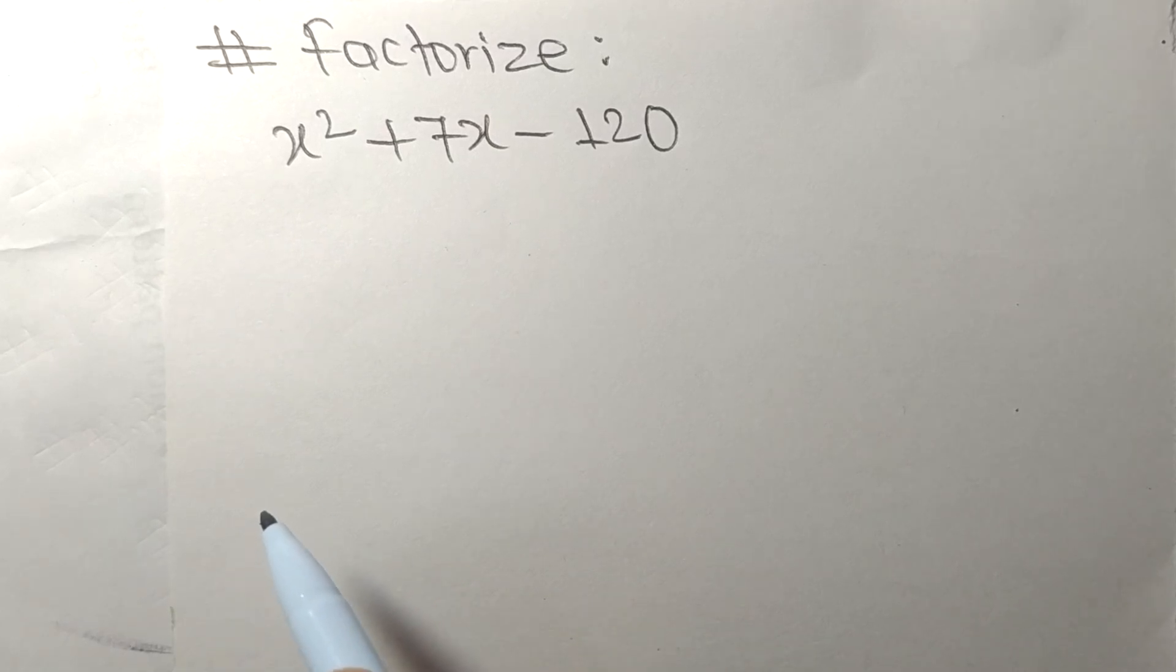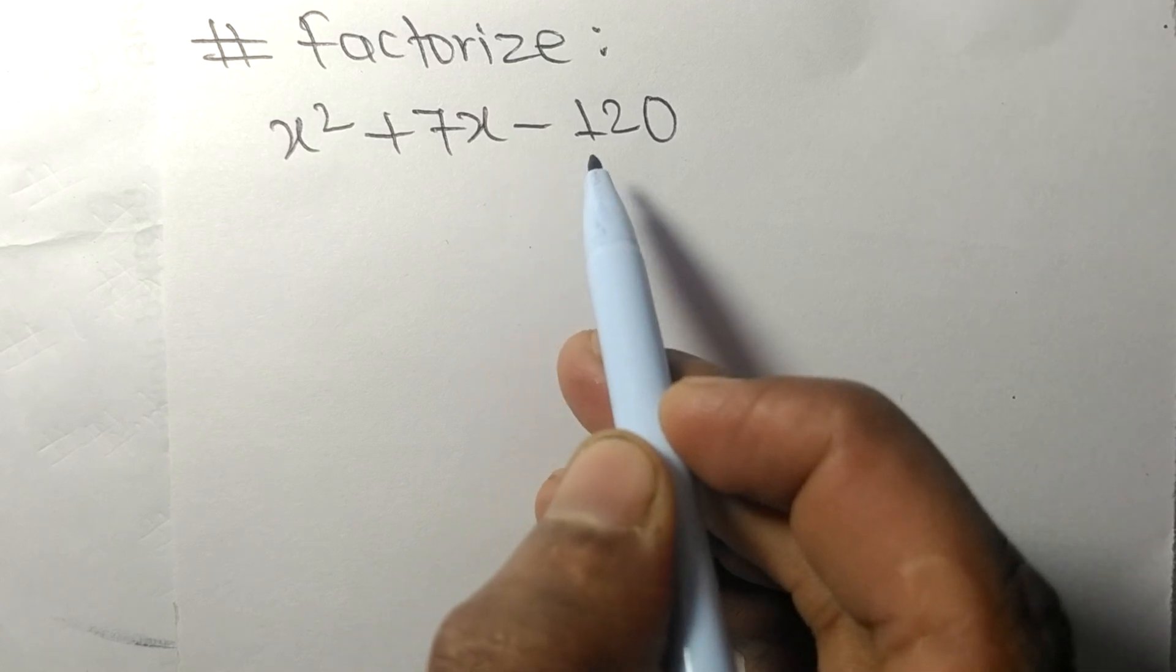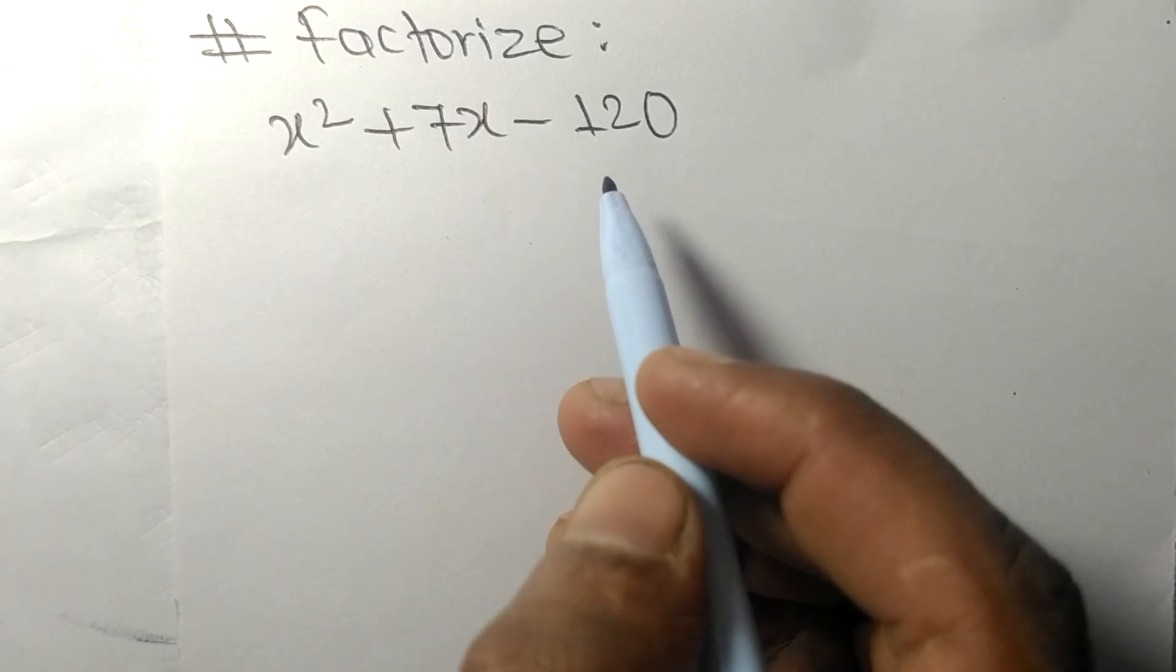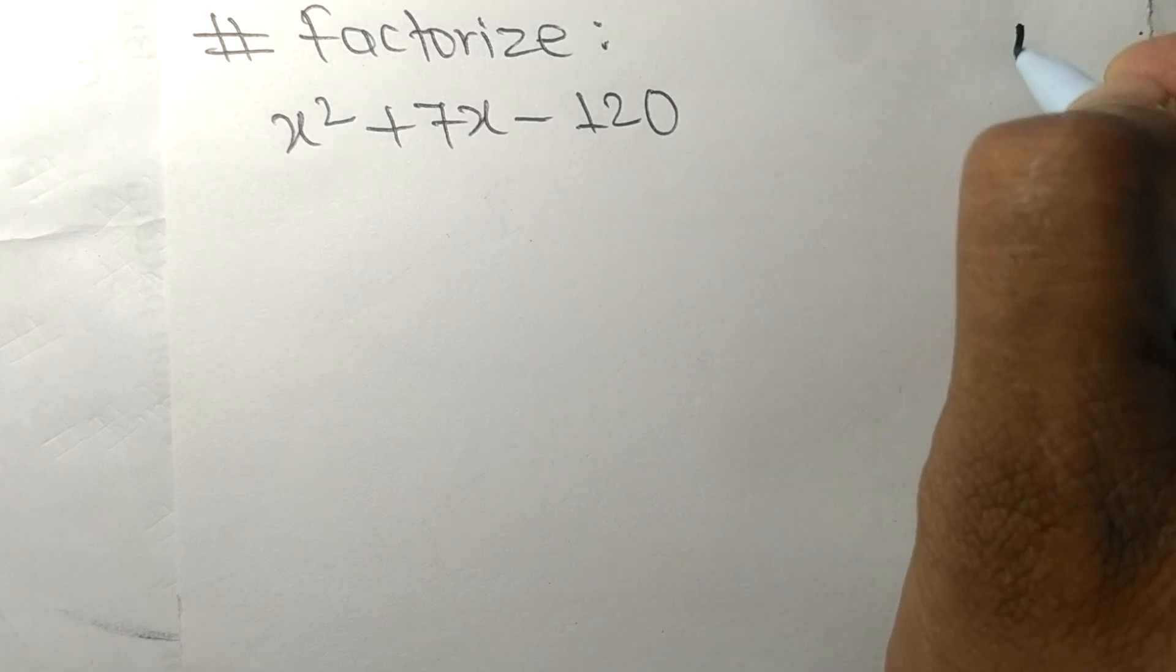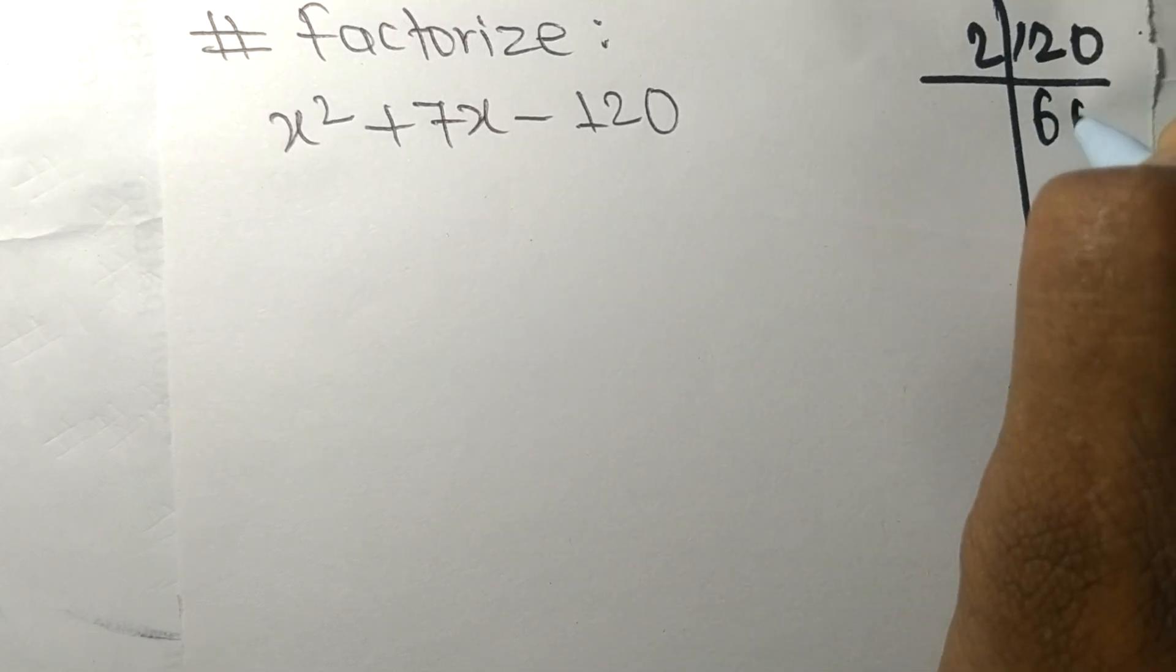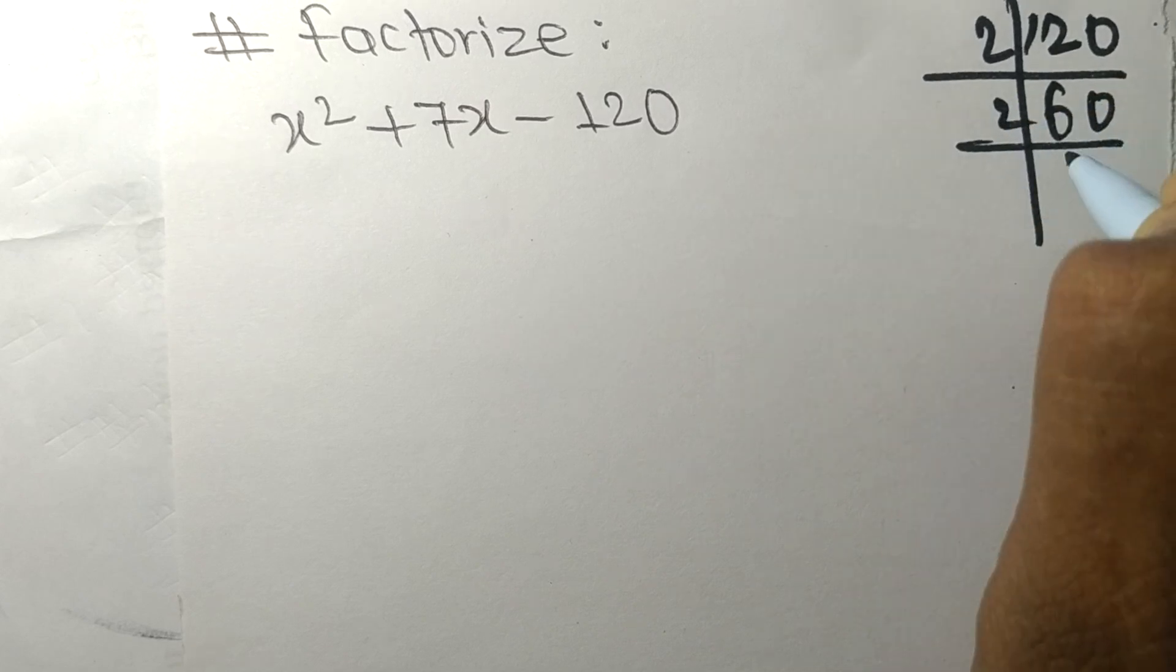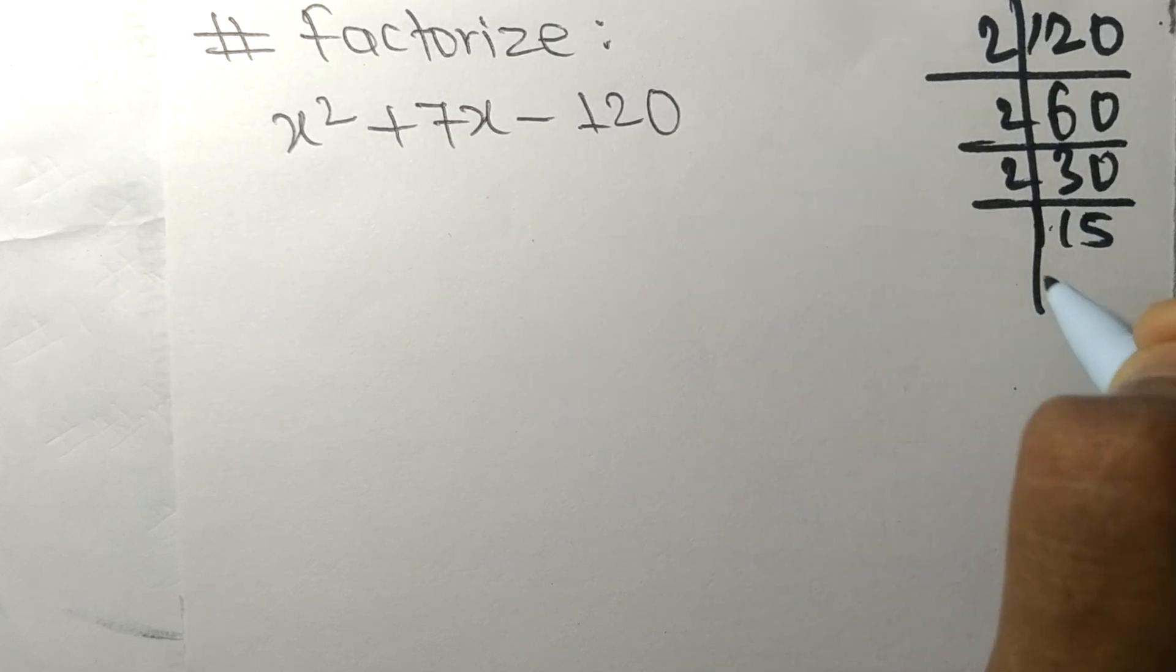Today in this video we shall factorize x² + 7x - 120. First we factorize the number 120. That is 2 times 60 means 120, 2 times 30 means 60, 2 times 15 means 30.